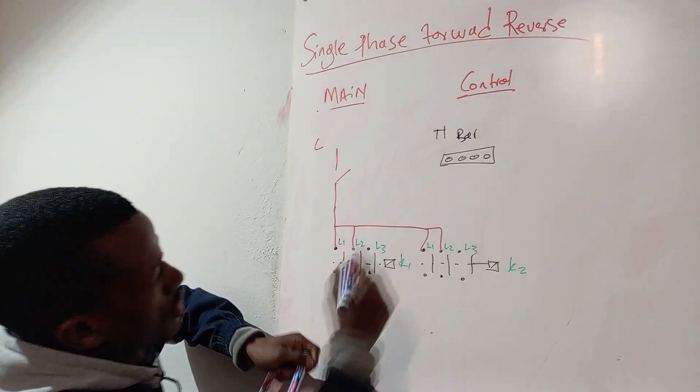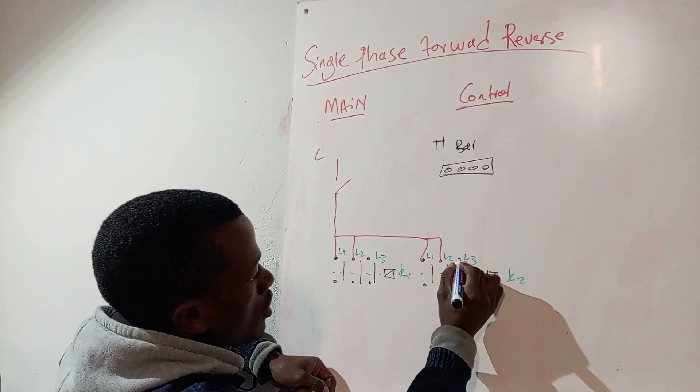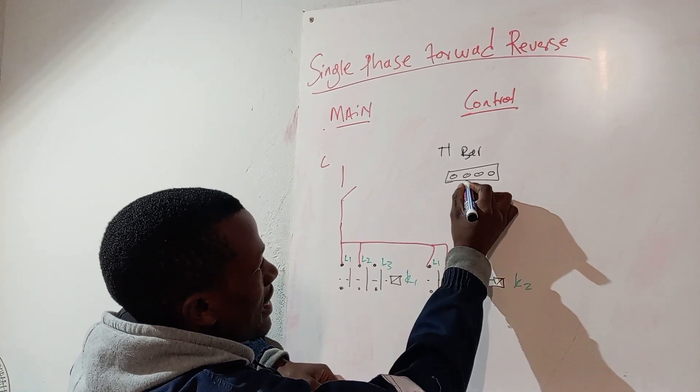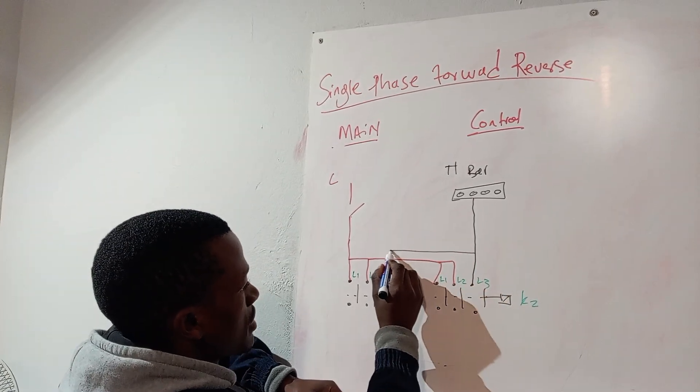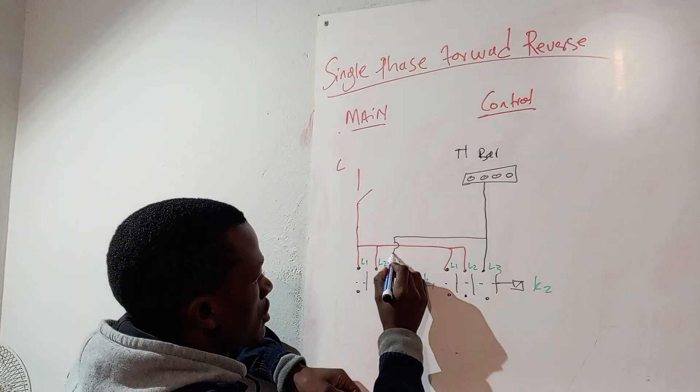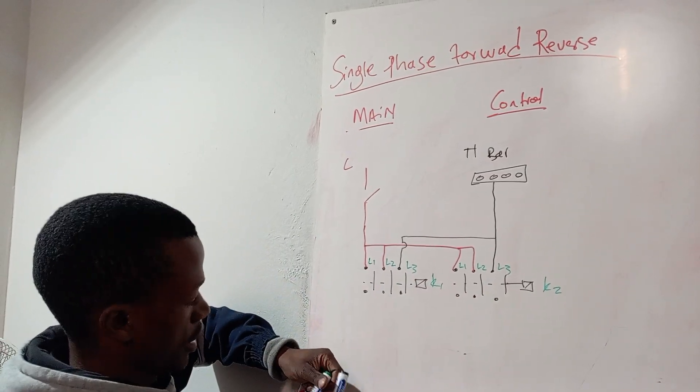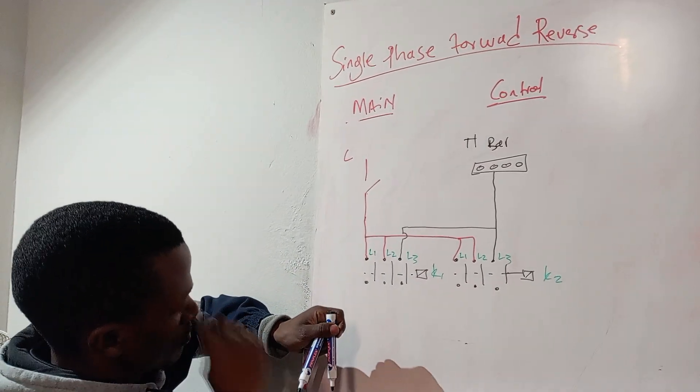So if you've got your neutral, the neutral goes straight to L3 and we also have a neutral coming here to L3.